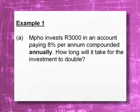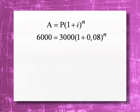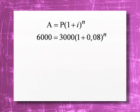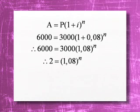How long will it take for the investment to double? We know the formula for compound interest: A equals P times (1 plus i) to the power of N. Substituting the values: present value is 3,000, the final amount is 6,000, and the interest rate is 0.08 — don't forget to convert the percentage to a decimal by dividing by 100. We get 6,000 equals 3,000 times 1.08 to the power of N. Dividing both sides by 3,000 gives us 2 equals 1.08 to the power of N.